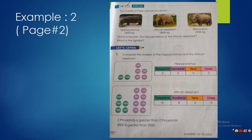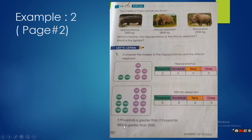Now look at example number 2 on page 2. We have two numbers: 2500 and 5800. First we compare the digits in the thousands place — 5 is greater than 2. So 5800 is greater than 2500, because 5000 is greater than 2000, and therefore 5800 is greater than 2500.